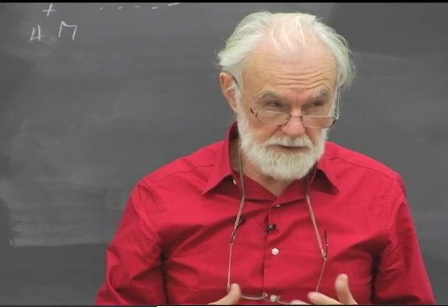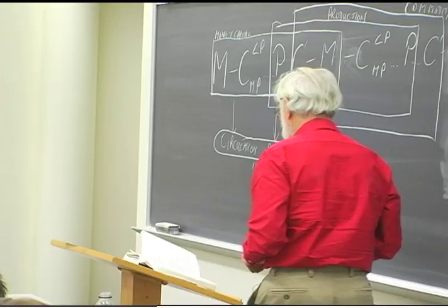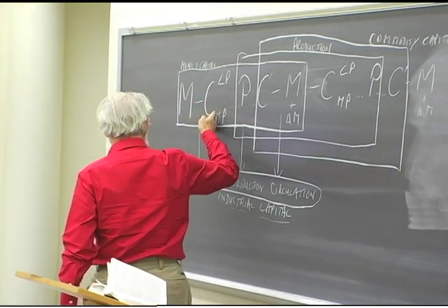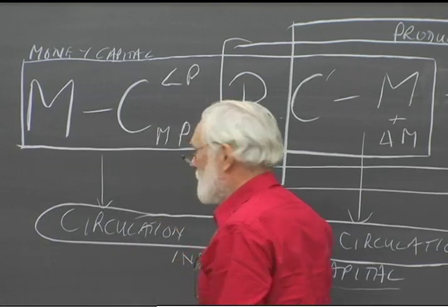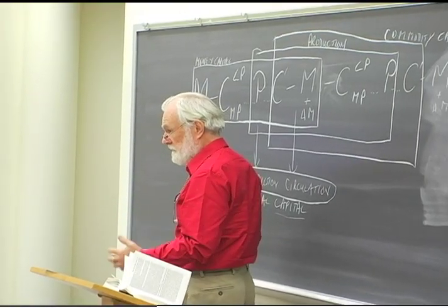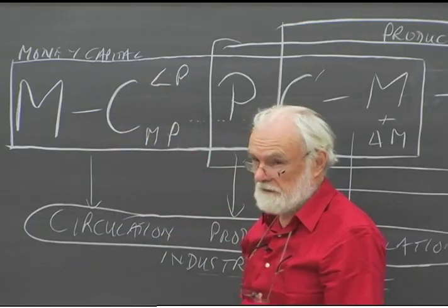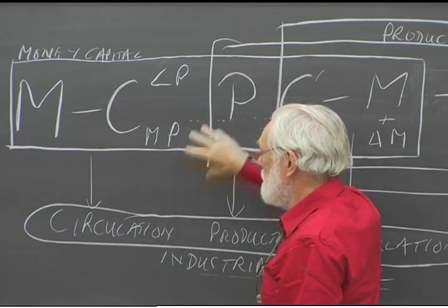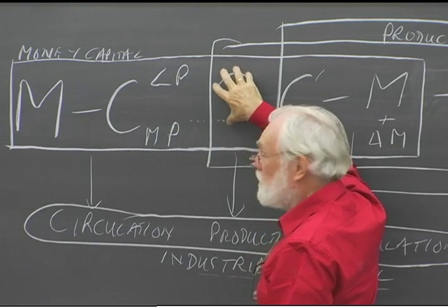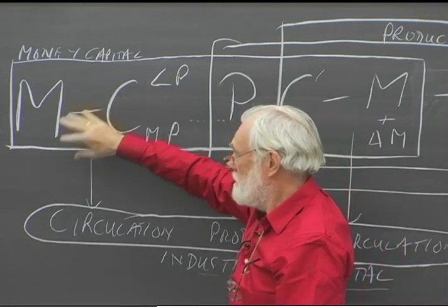Right throughout Volume Two, more attention is going to be paid to use value and the specificities of use value than was the case in Volume One, and it has very specific consequences. Obviously, money is being used to buy commodities — the means of production are the object of the labour process, and that is the objective aspect, brought together in production. So this transition is about trying to get us to the point of production via this circulation process. The circulation process is a precursor of moving into production.